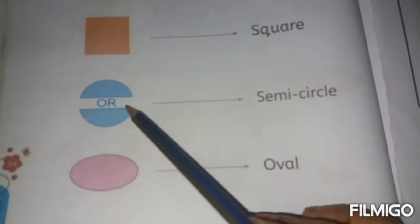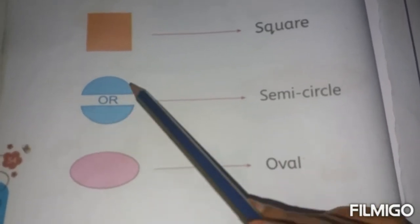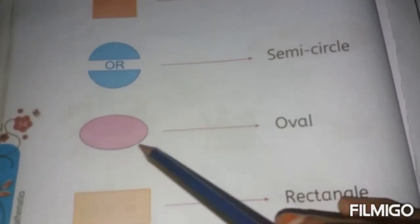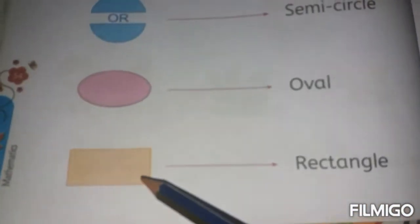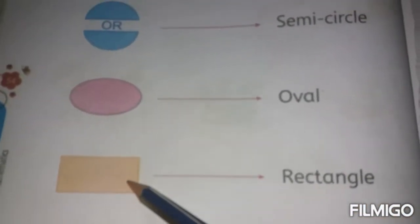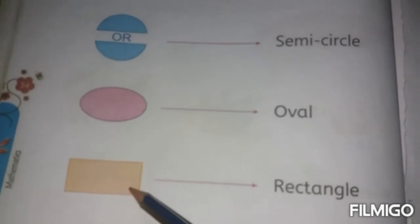This is a semicircle. Here, what is this? Semicircle. This is an oval. What is this? Oval. This shape is rectangle. Rectangle.